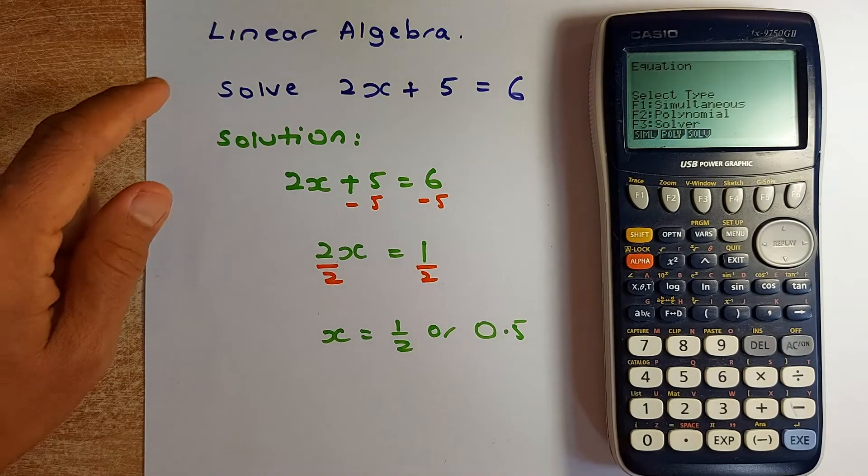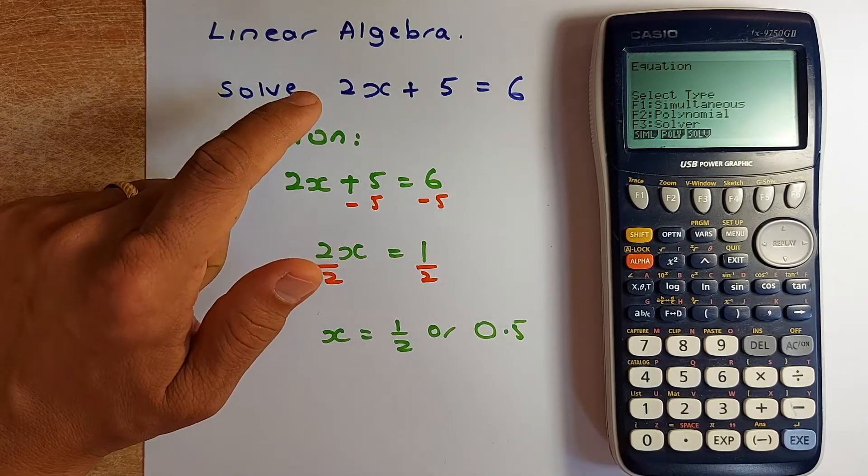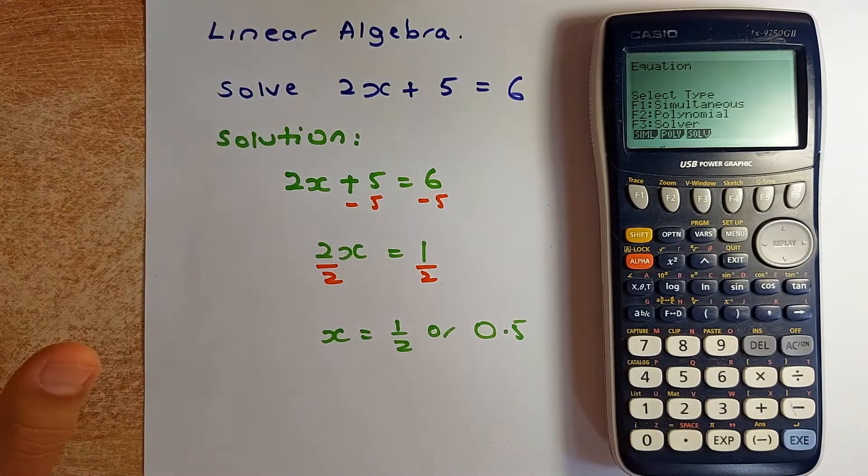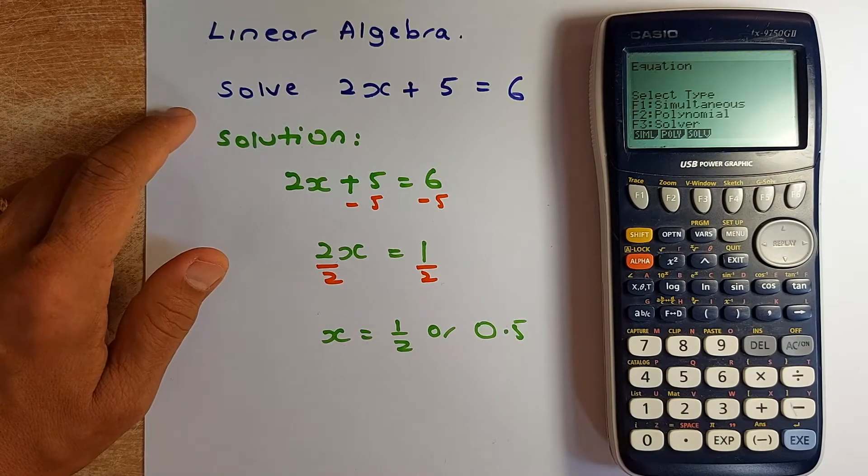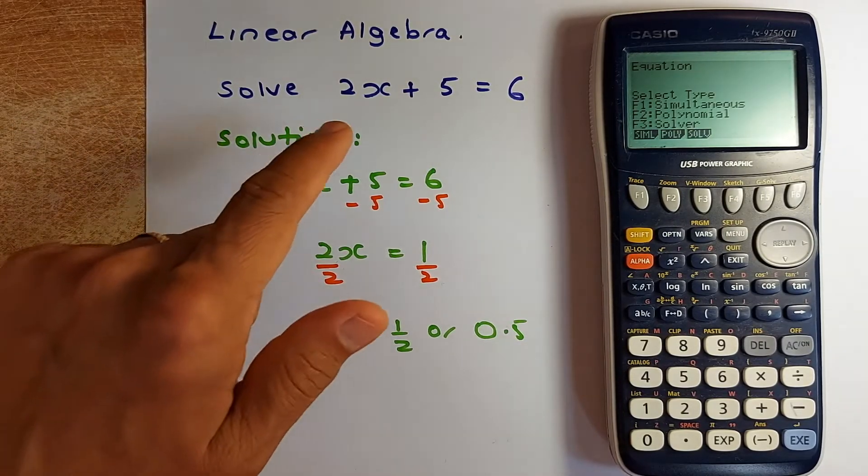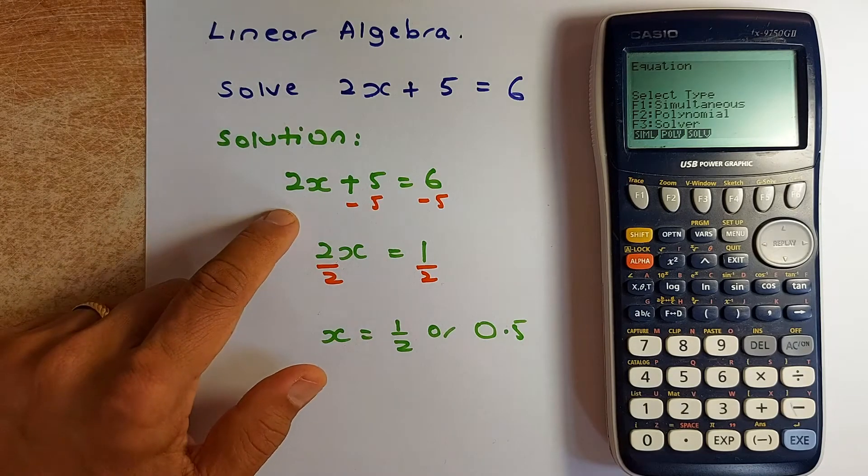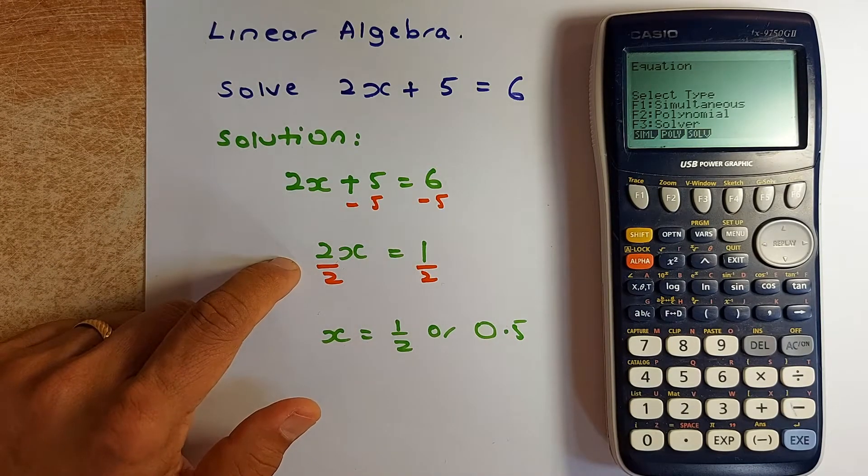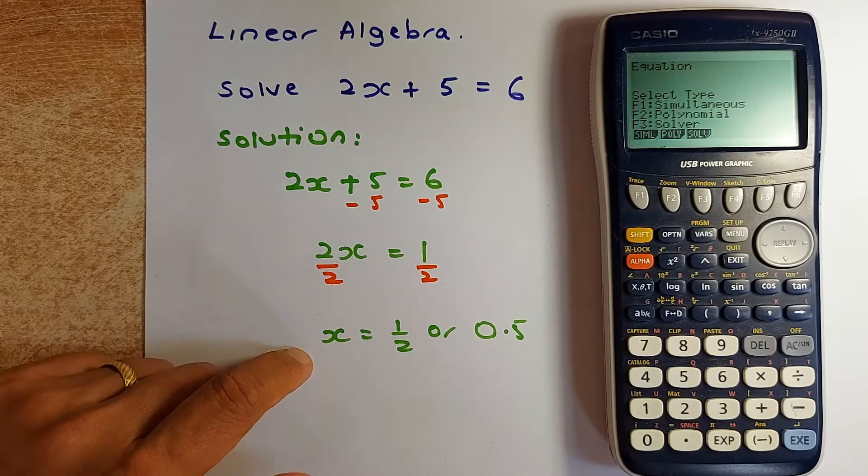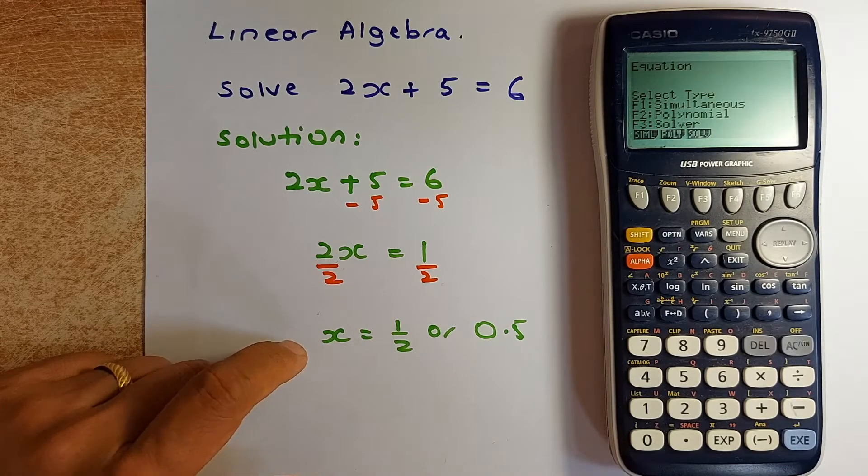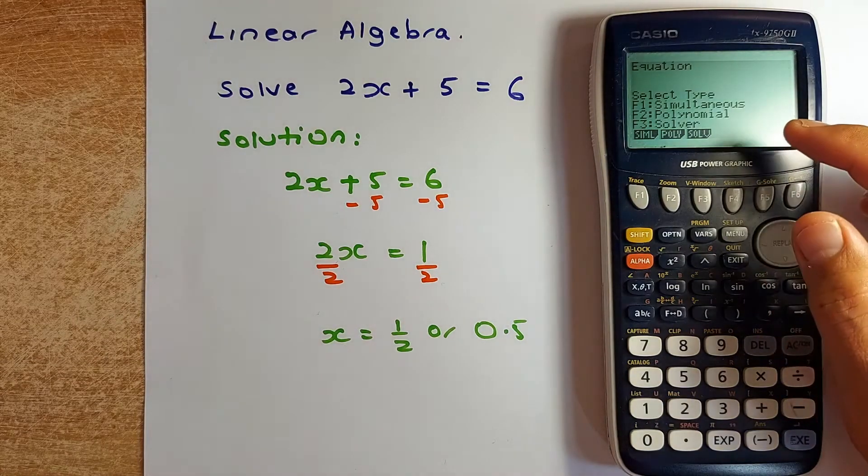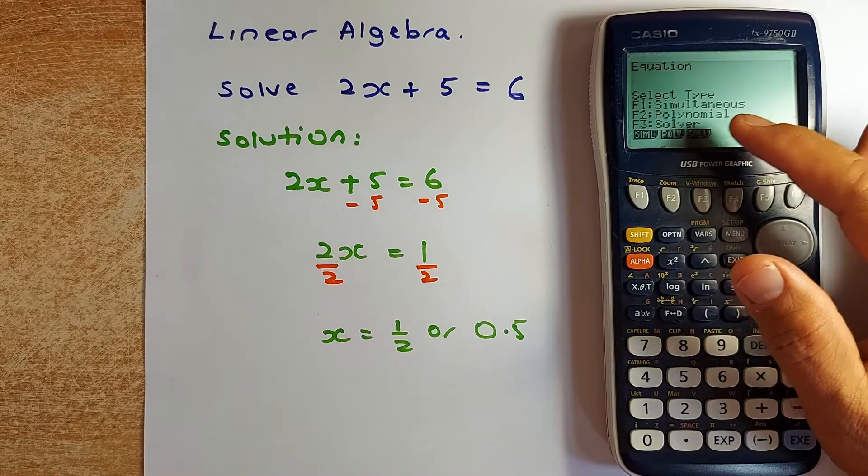The first one is called linear algebra. It means that there is no square or there is no cube or whatever. We are going to solve a simple equation 2x plus 5 equal to 6. So the solution is minus 5 on both sides, 2x equals to 1, divide by 2, and x equals to half or 0.5. The function you are going to use is solver. When you do a linear algebra, you are using solver.